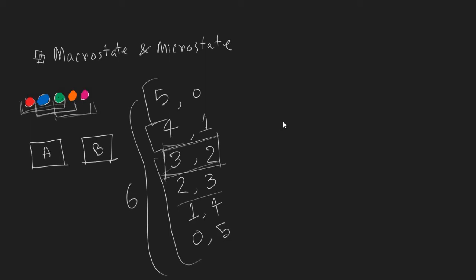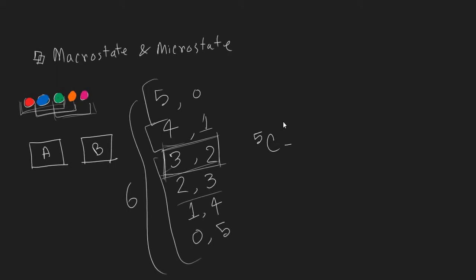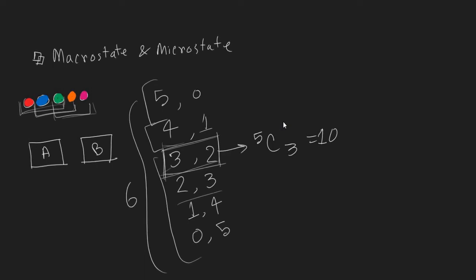Such as, we can take a combination like this, 5C3. So, we will get 10 combinations. So, in each macrostate, we are getting some more combinations like this one.